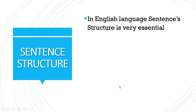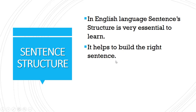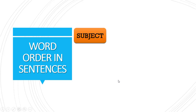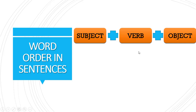Sentence structure in the English language is very essential to learn. It helps to build the right sentence. The word order has a prominent role not only in English but in all languages in the world. The word order in sentences follows: subject plus verb plus object.